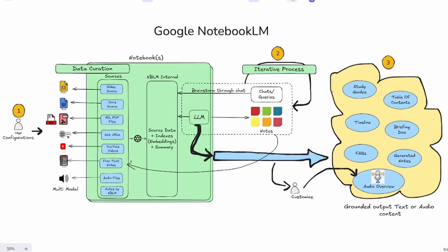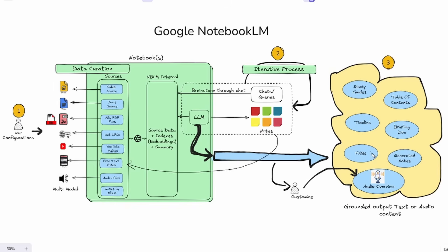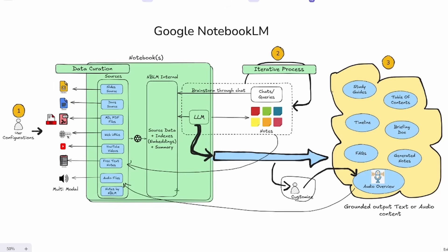In the final output production step, you create notes that represent your final deliverables. For a research student, this could be a thesis outline or presentation. For a content creator, a video script. For a business owner, actionable items to improve their business. The podcast or audio overview feature is a unique output option, creating engaging dialogues between two hosts — perfect for consuming information across all sources or for podcast creators looking for an easy way to generate content. While customization options are currently limited, interestingly you can also use the audio overview as a source for this notebook or another. While there's no direct integration to export to Google Docs or Slides yet, you can manually copy the content to your preferred destination.